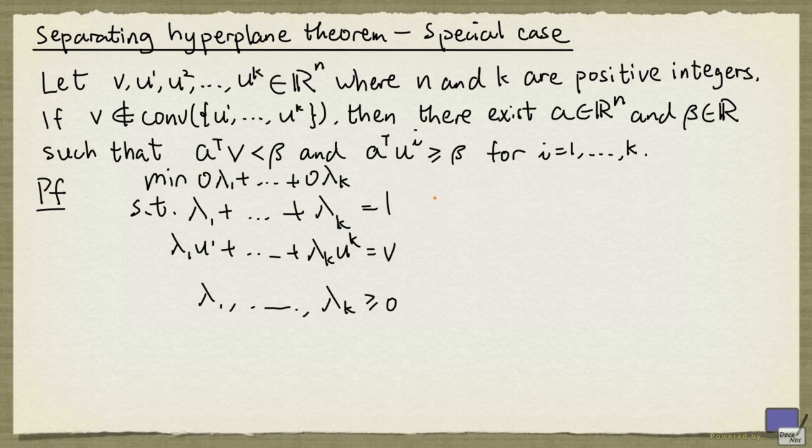Now, the dual problem of this is the following. The dual variable that we are going to associate with this constraint is going to be y0, and the rest will be y1 up to yn.